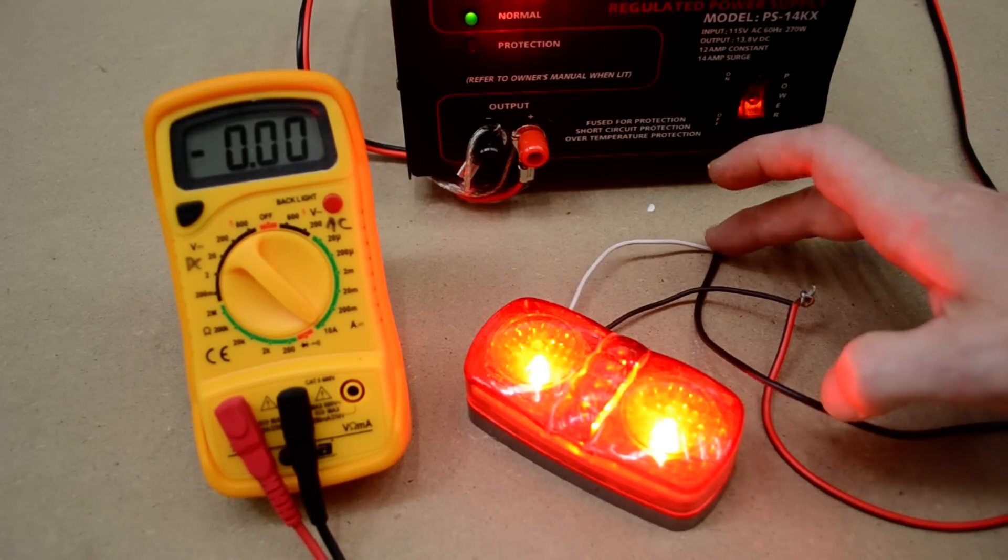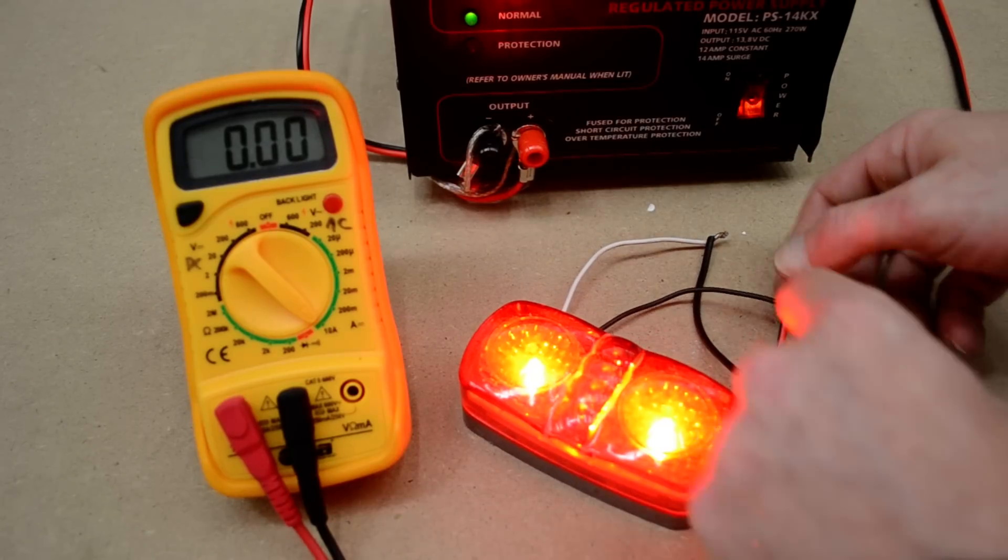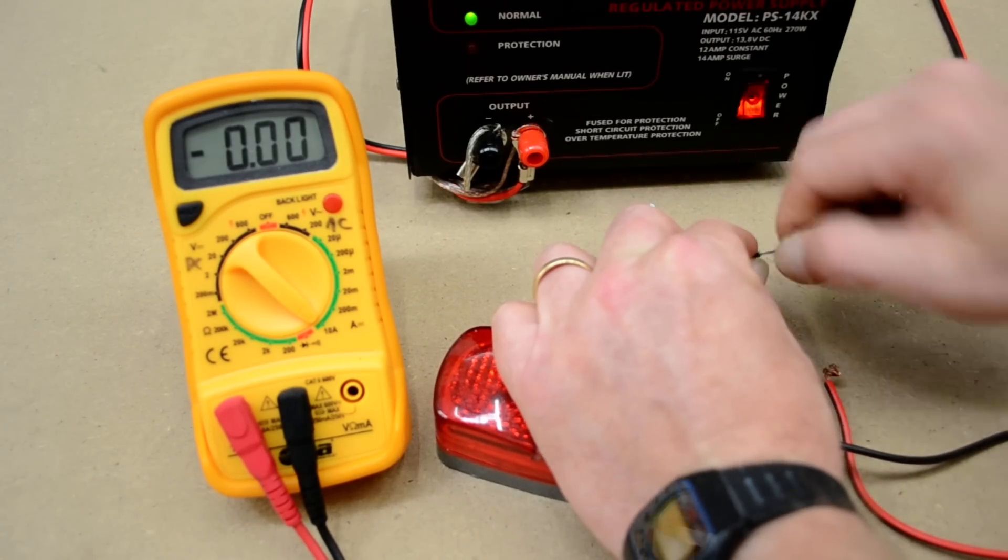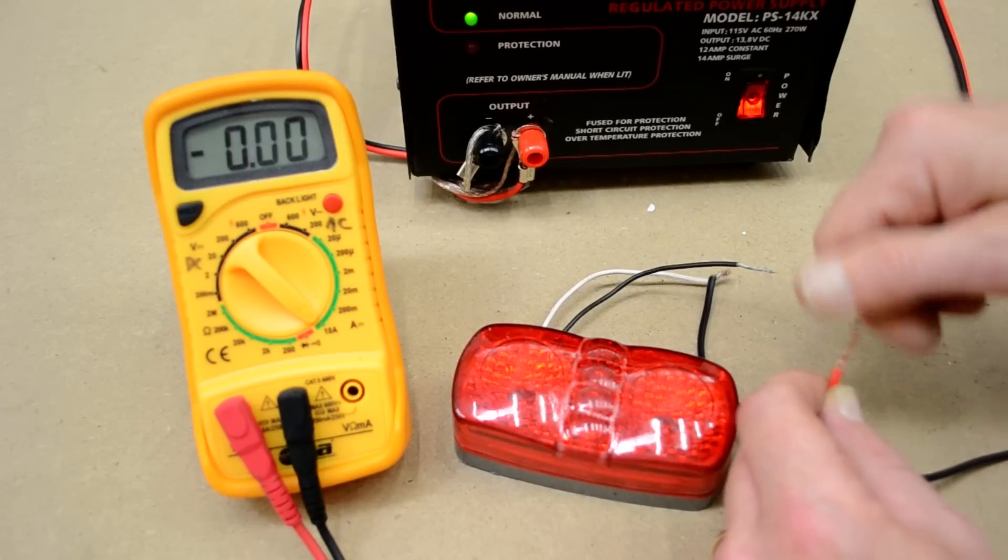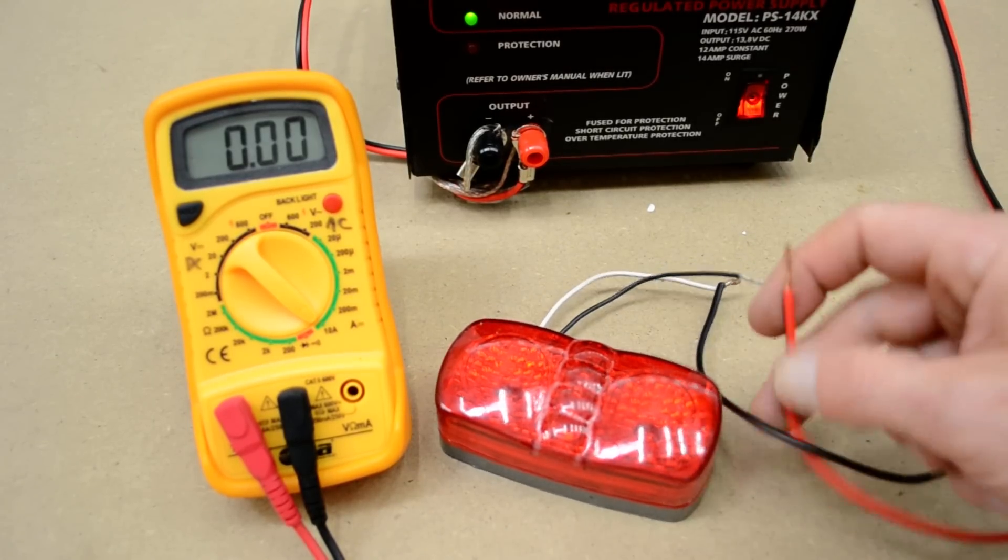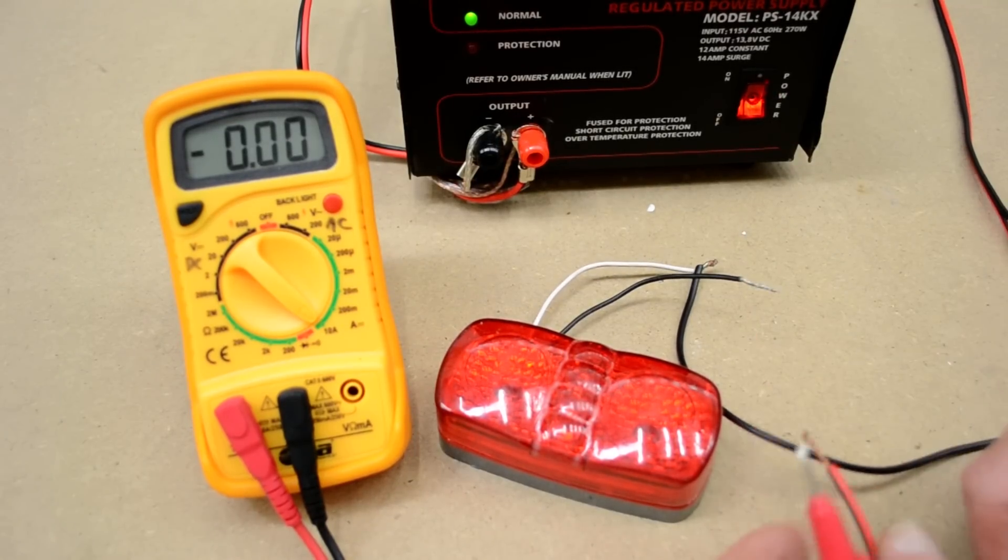The ground you're going to leave connected—don't mess with that. The positive side of this light you're going to disconnect. On the other side, you have your feed line, which is this red wire coming from my power supply.